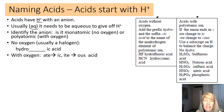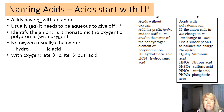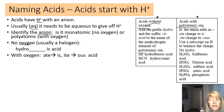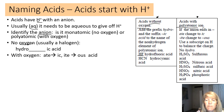When naming an acid, first identify the anion. There are two types: acids without oxygen, and acids with a polyatomic ion containing oxygen. For acids with no oxygen, use the prefix 'hydro-' — the anion is usually a halogen. For example, HF becomes hydrofluoric acid.